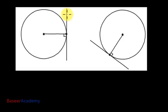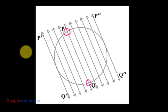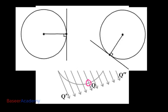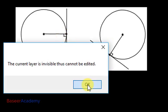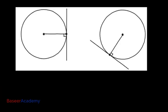The tangent and the radius to the point of contact are perpendicular to each other — they make a 90-degree angle. So always remember: the radius to the point of contact and the tangent are always perpendicular to each other, and the angle formed here is 90 degrees.